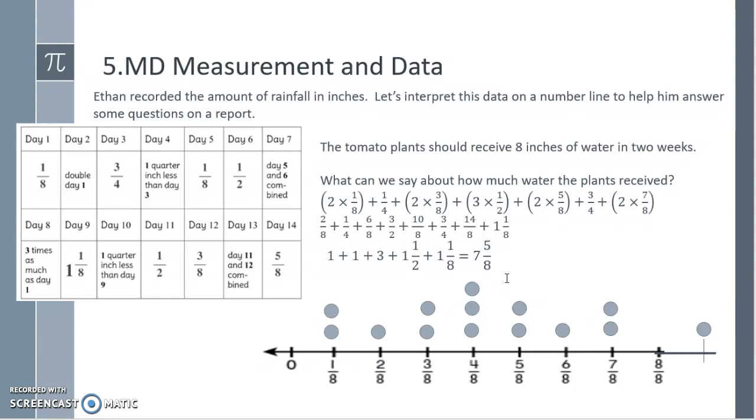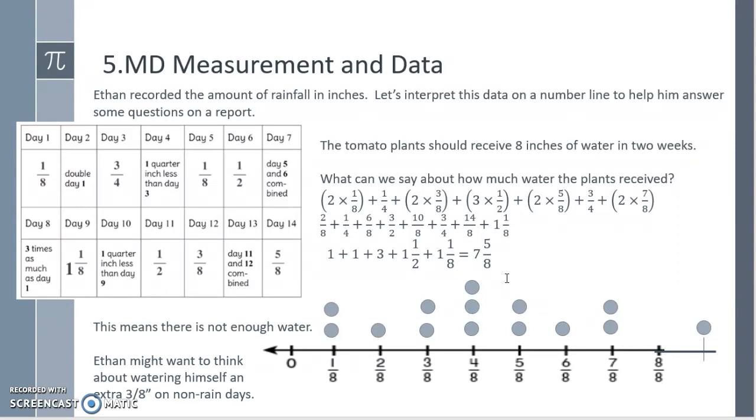Well, a tomato plant should receive eight inches. We didn't quite have enough water, so Ethan might want to think about watering himself an extra three eighths of an inch on non-rain days.